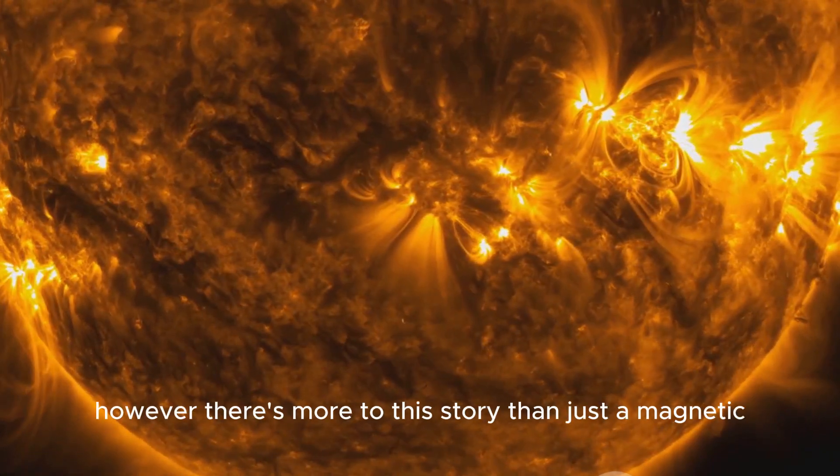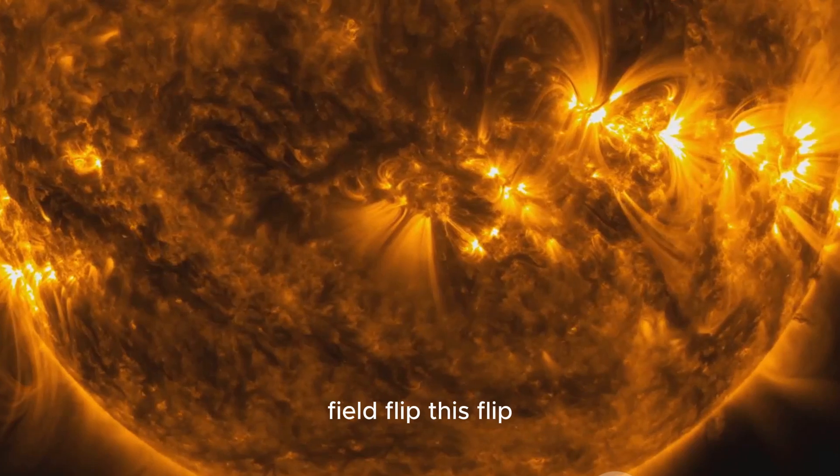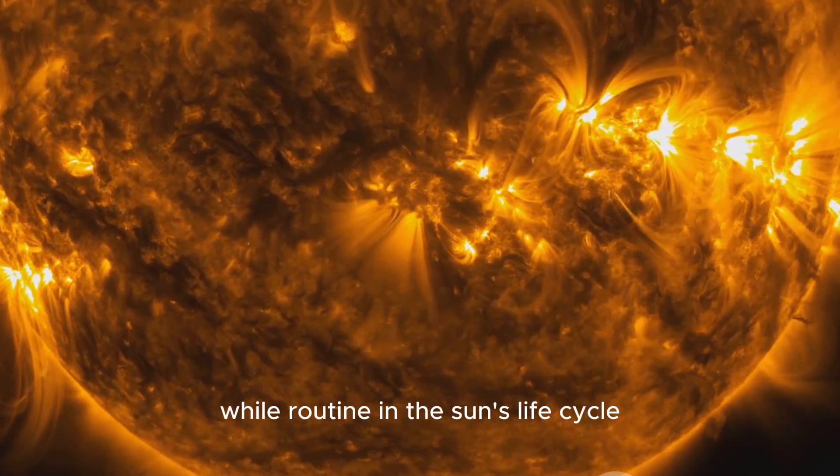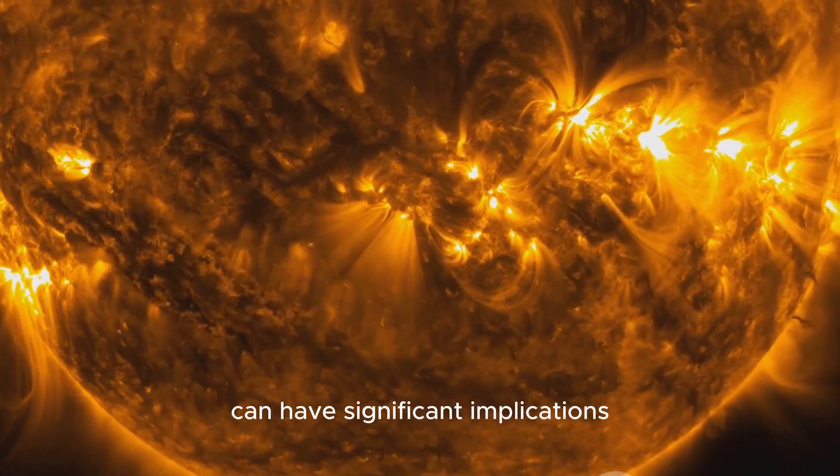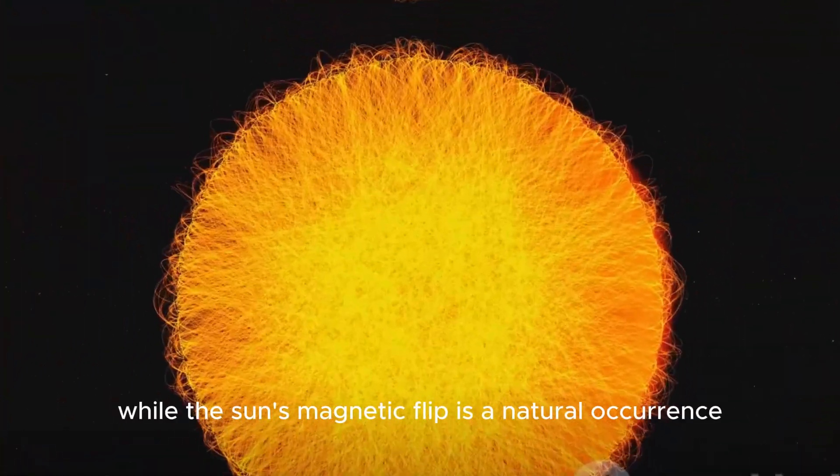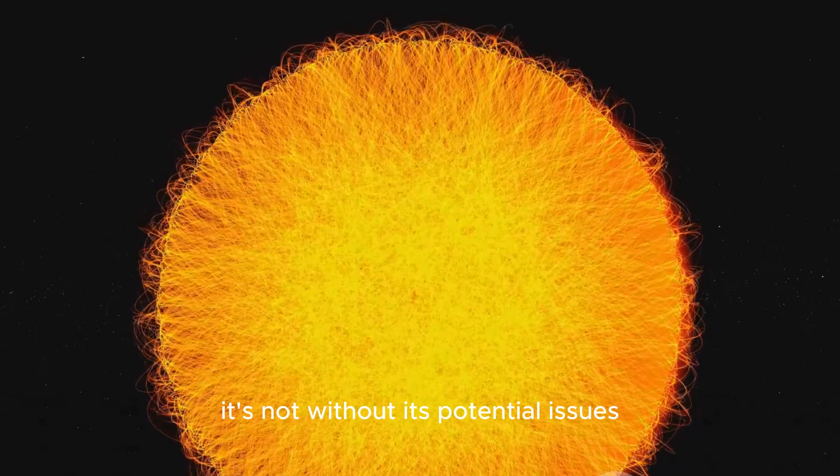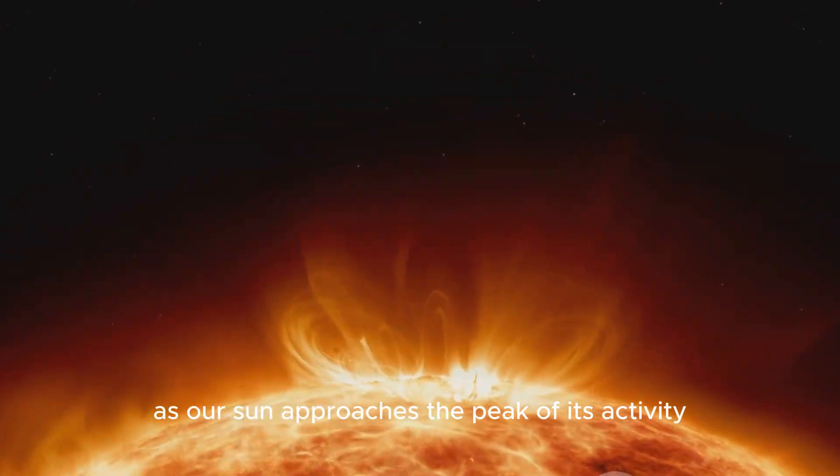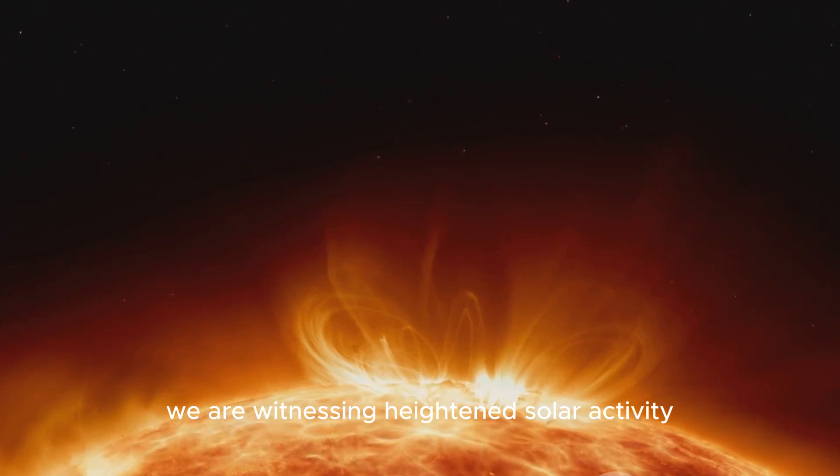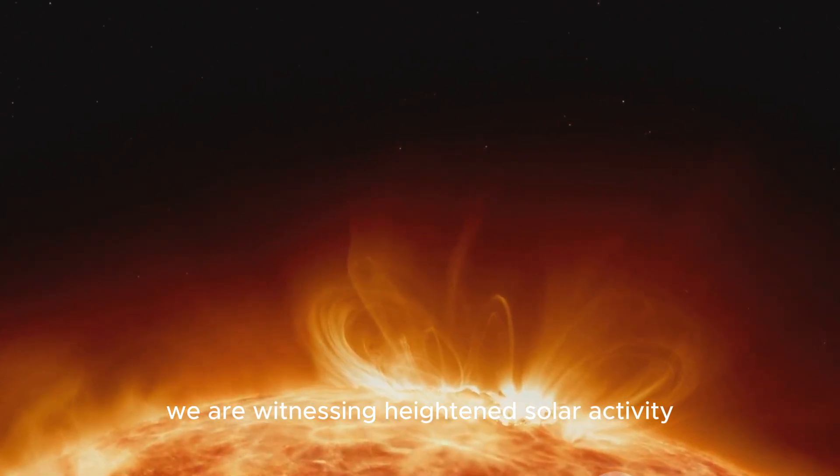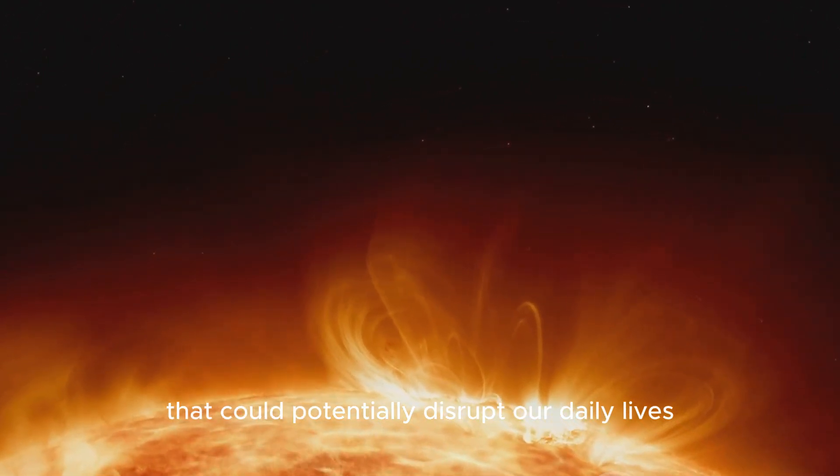However, there's more to this story than just a magnetic field flip. This flip, while routine in the sun's life cycle, can have significant implications. While the sun's magnetic flip is a natural occurrence, it's not without its potential issues. As our sun approaches the peak of its activity, we are witnessing heightened solar activity that could potentially disrupt our daily lives.